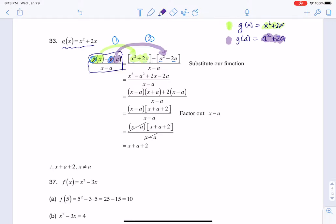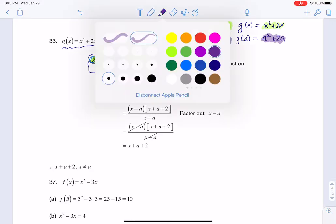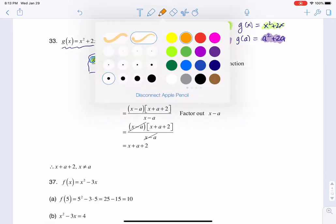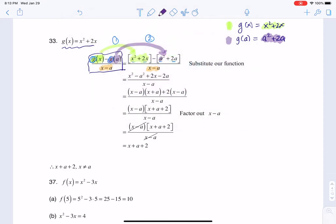Now the denominator x minus a is going to stay x minus a. Hold on, let me complete this. This should have been the purple one, a squared plus 2a, so I'm substituting.